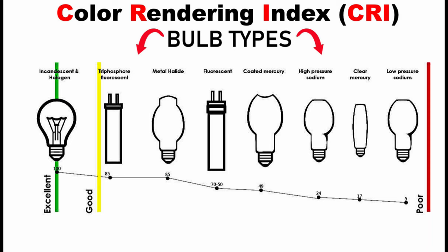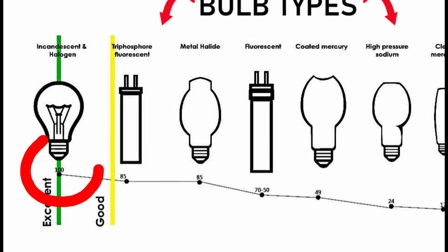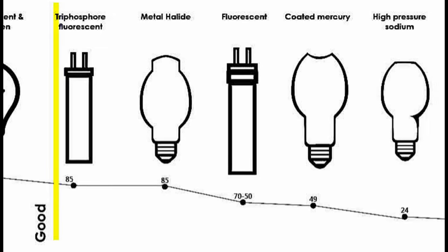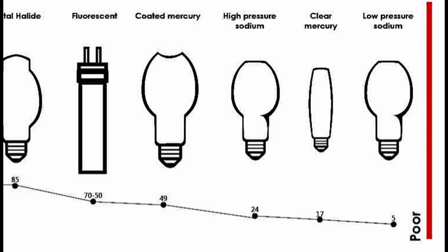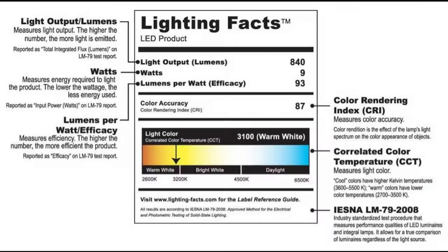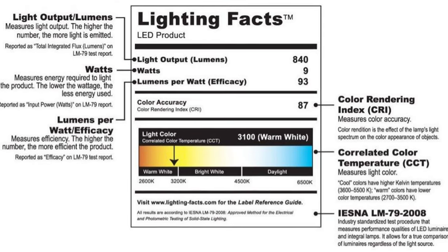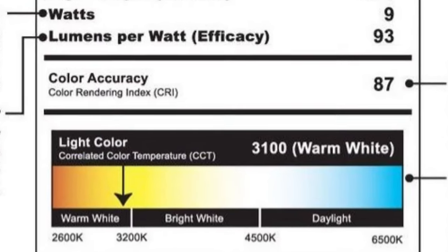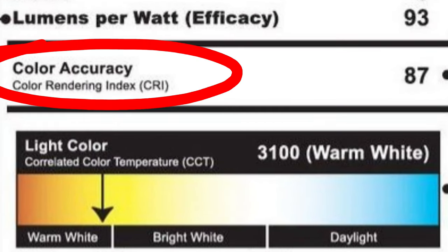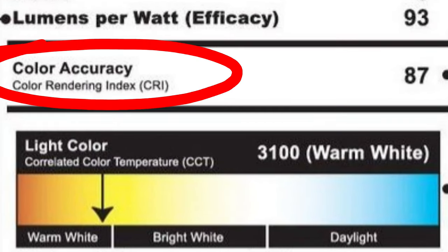Incandescent bulbs, for example, have a near-perfect CRI of 100, as they closely mimic sunlight. However, they are not energy efficient. On the other hand, LED bulbs, which are more energy efficient, can have a wide range of CRI ratings, so it is essential to check the packaging.